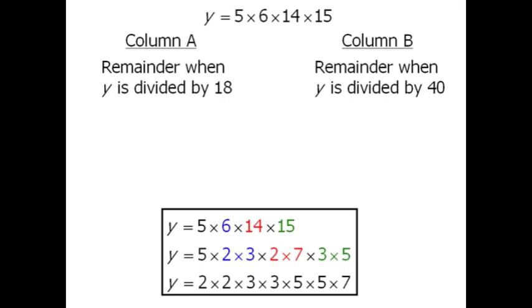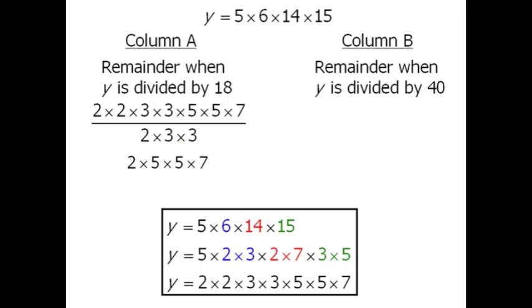Now up to column A. Let's divide y by 18. Now notice that we've taken 18 here and rewritten it as the product of prime numbers. At this point we can see that we can eliminate several numbers, leaving us with simply an integer.